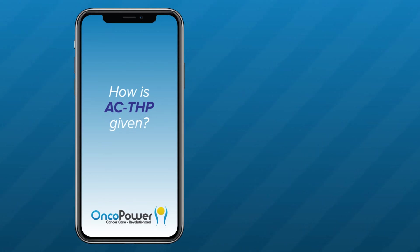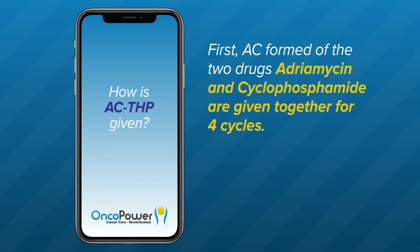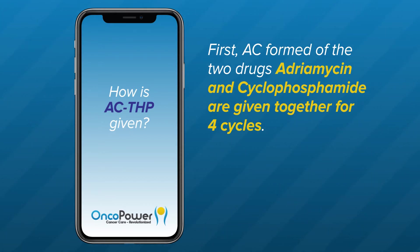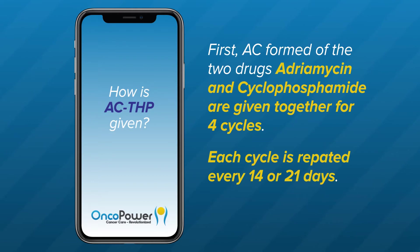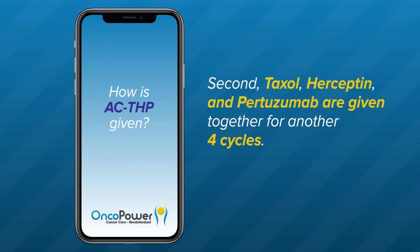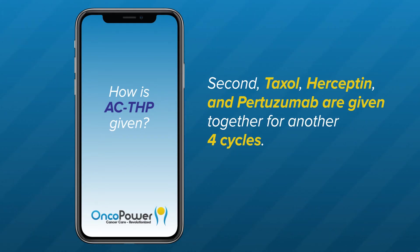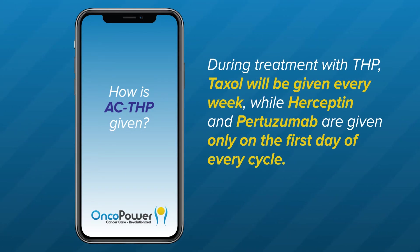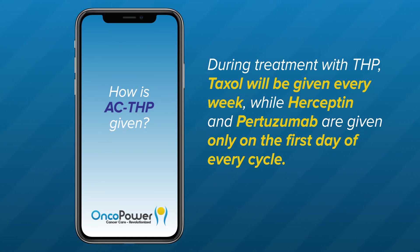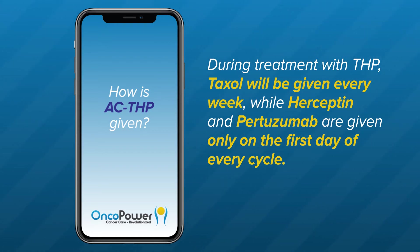How is ACTHP given? First, AC — formed of the two drugs adriamycin and cyclophosphamide — are given together for four cycles. Each cycle is repeated every 14 or 21 days. Second, taxol, Herceptin, and pertuzumab are given together for another four cycles. During treatment with THP, taxol will be given every week while Herceptin and pertuzumab are given only on the first day of every cycle.